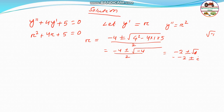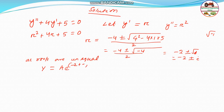So if the roots of the equation become this way, the roots are unequal. Since roots are unequal, this is Euler's theory, so we can use Euler's theory. That gives y equal to A·e to the power of (minus 2 plus i)x plus B·e to the power of (minus 2 minus i)x, where A and B are any arbitrary constants.